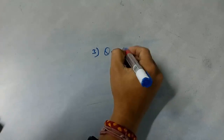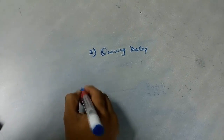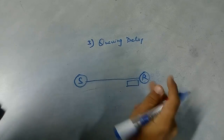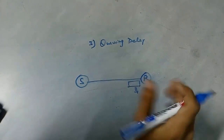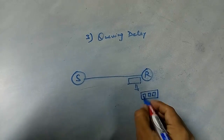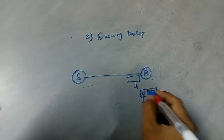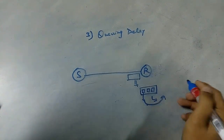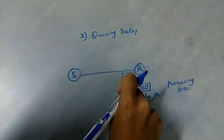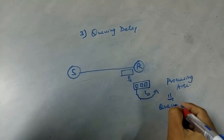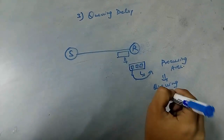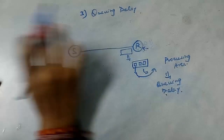Now let's talk about queuing delay, the third type of delay. There is a sender, a receiver, and a communication link. Before the processing area, there is a queue or buffer where many packets wait. The time taken by our packet to pass through this buffer and reach the processing area is known as queuing delay. There is no general formula for queuing delay, as it depends on the processing speed of the receiver.